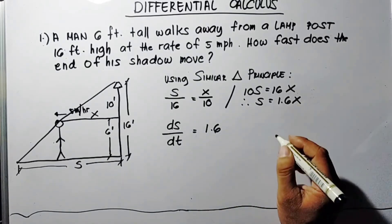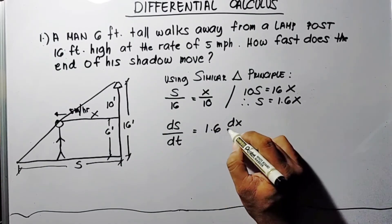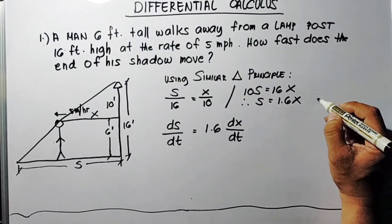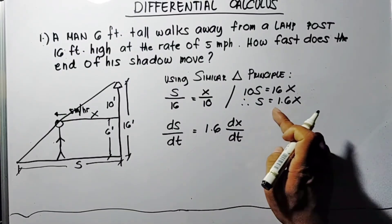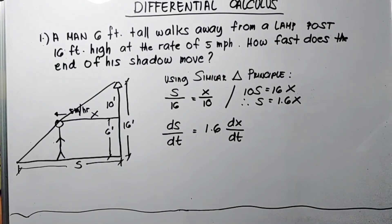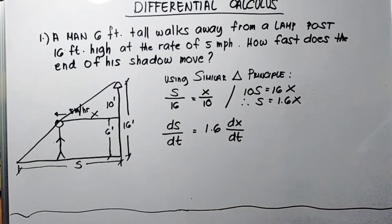The derivative of 1.6x using the u^n times u^(n-1) rule, that will become 1.6.